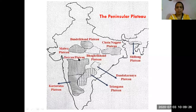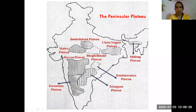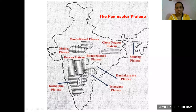The peninsular plateau is divided into two parts: the Central Highland and the Deccan Plateau. The Central Highland is further divided into the Malwa Plateau, Bundelkhand Plateau, Bagelkhand Plateau, and Chhota Nakpur Plateau. The Deccan Plateau is divided into the Maharashtra Plateau, Karnataka Plateau, Dandakaranya Plateau, and Telangana Plateau.